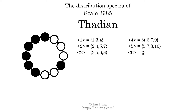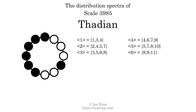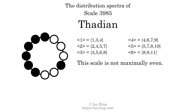The generic interval of 6 scale steps comes in 3 different specific interval sizes: 8 semitones, 9 semitones, and 11 semitones. The spectrum width of this generic interval is 3. The spectrum variation is the sum of all the widths divided by the number of tones. The spectrum variation of this scale is 3.714. Since the variation is greater than 0, this indicates that the scale is not perfectly even. The highest spectrum width is 5. Since this is greater than 1, we know that this scale is not maximally even.